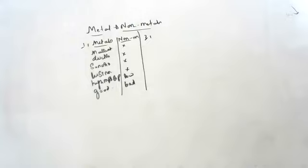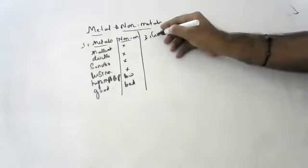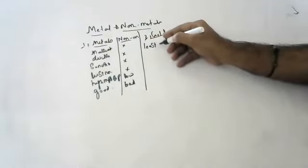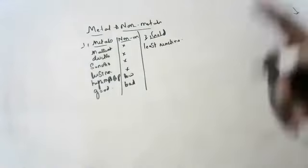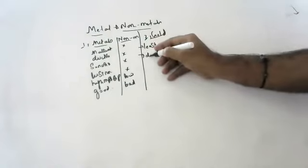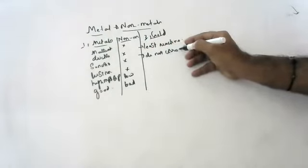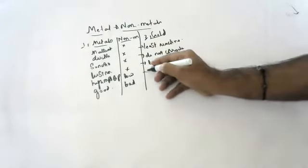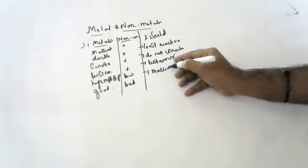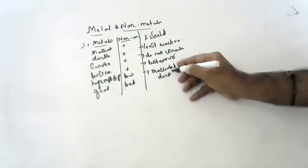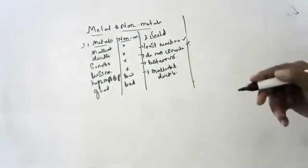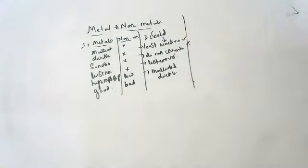Second question: why is gold widely used for making jewelry? Gold is highly malleable and ductile. Number one, it is least reactive. Number two, it does not corrode or rust - rusting is specific to iron. Gold is also lustrous. The best reason is that it does not corrode and is least reactive. Even copper and iron are malleable and lustrous, so the main distinguishing reason is that gold is least reactive.